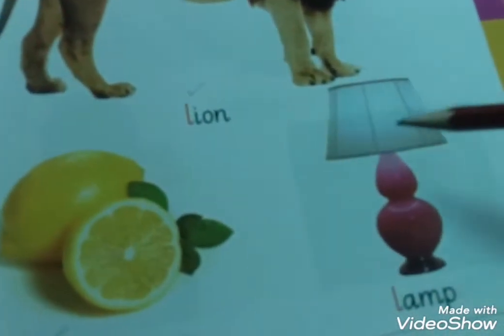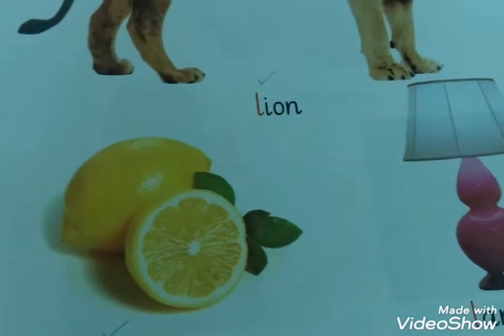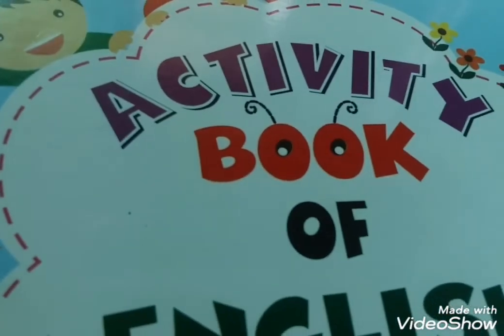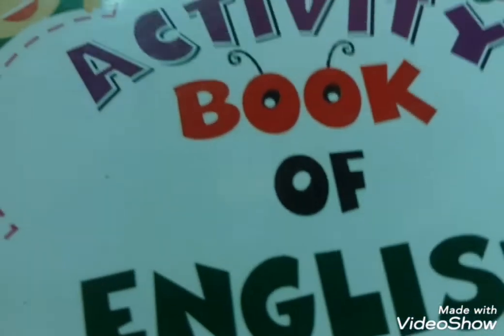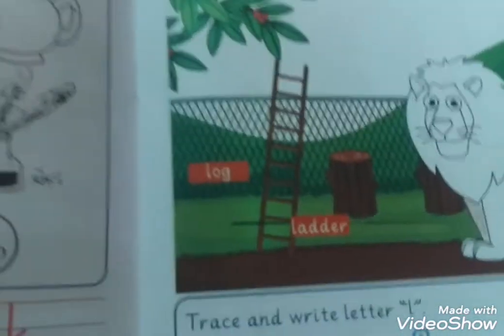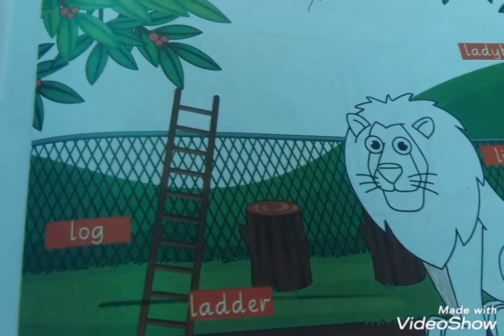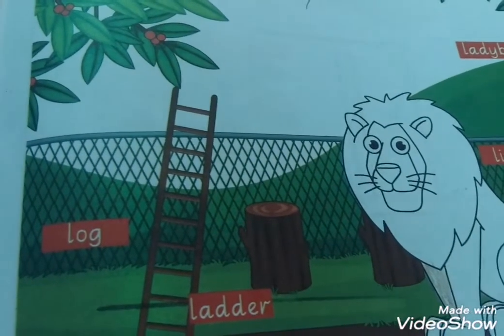This is your reading page, students. This is the activity book of English, open to page number 23. In page 23, you are looking at the picture. They are saying color the picture. First of all, we will read the pictures that begin with L.